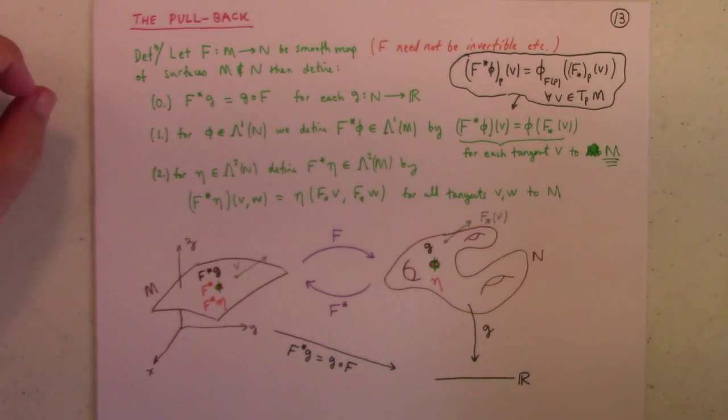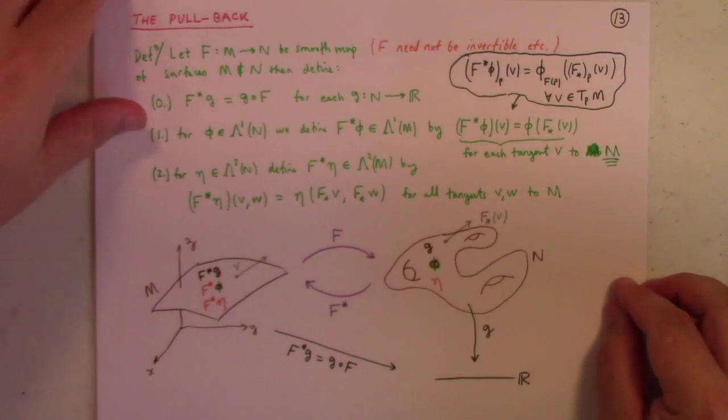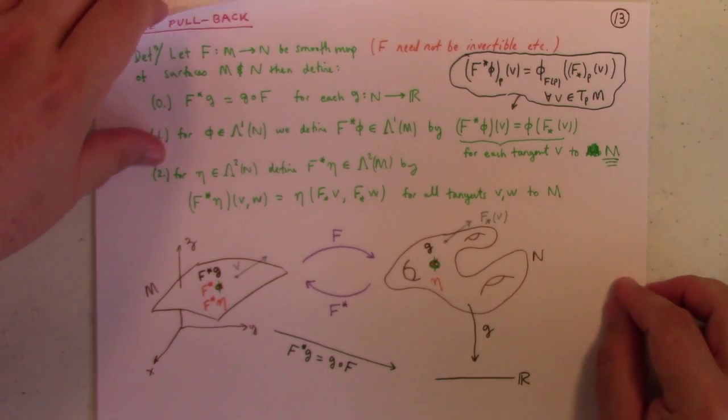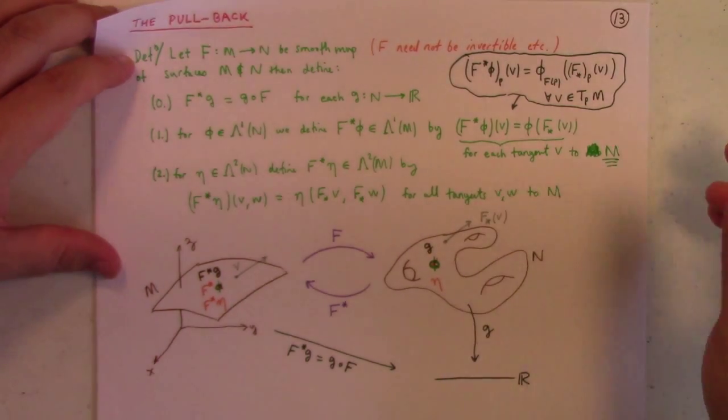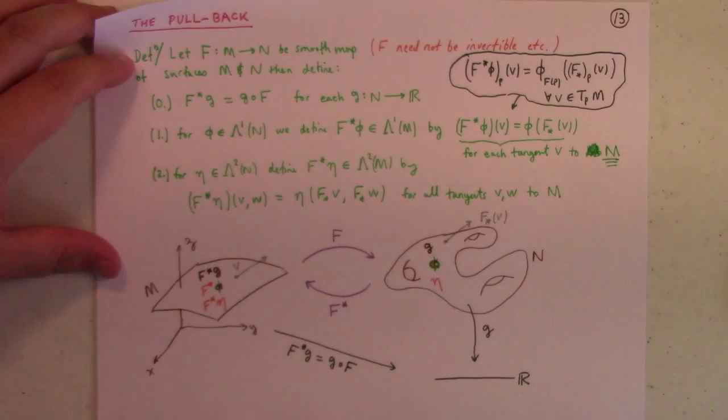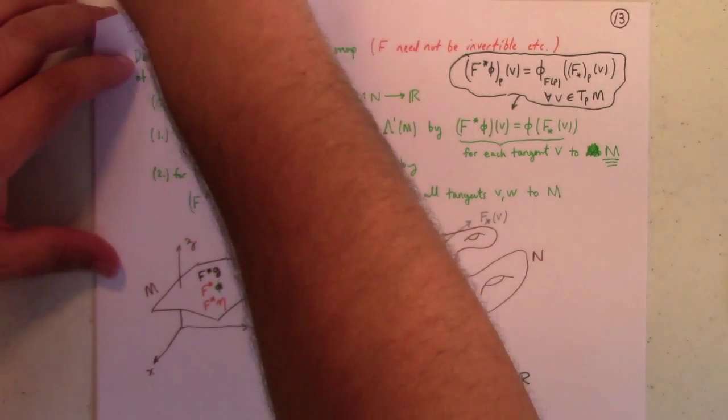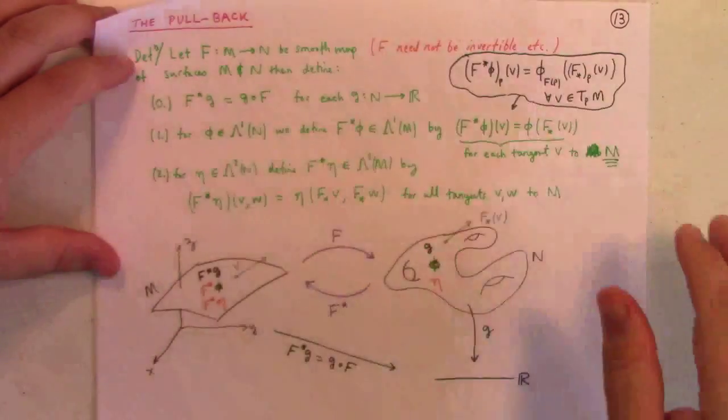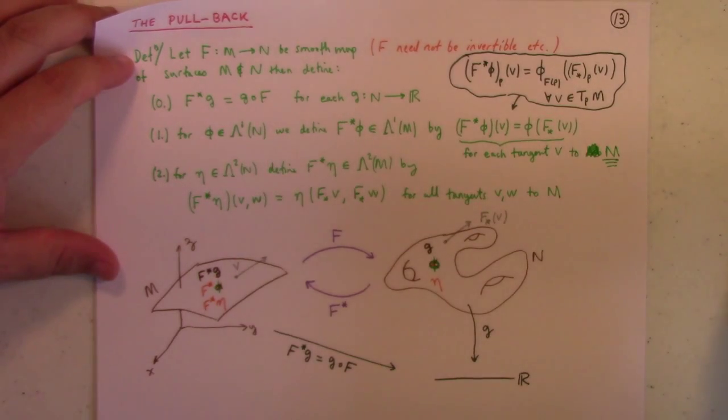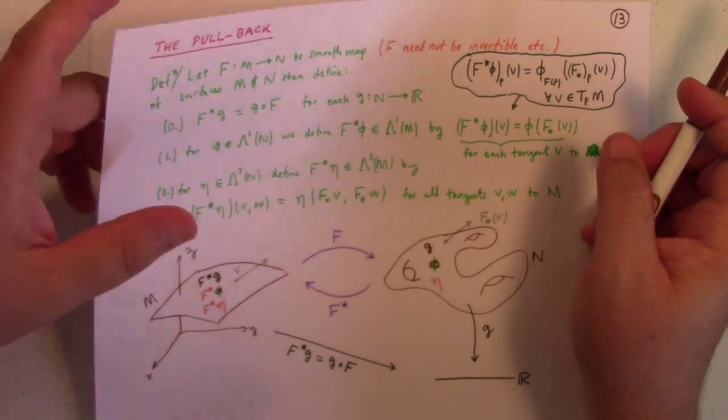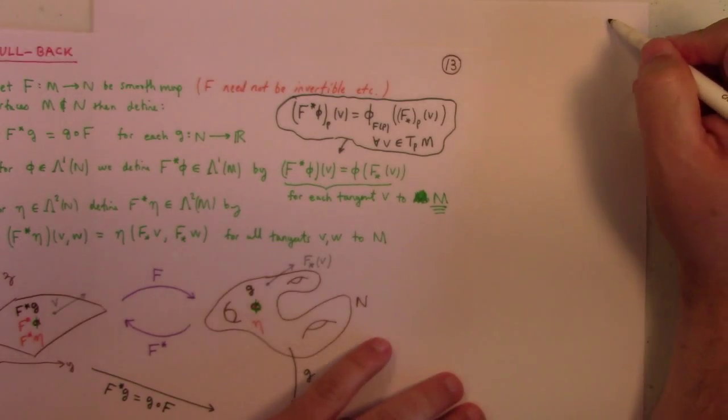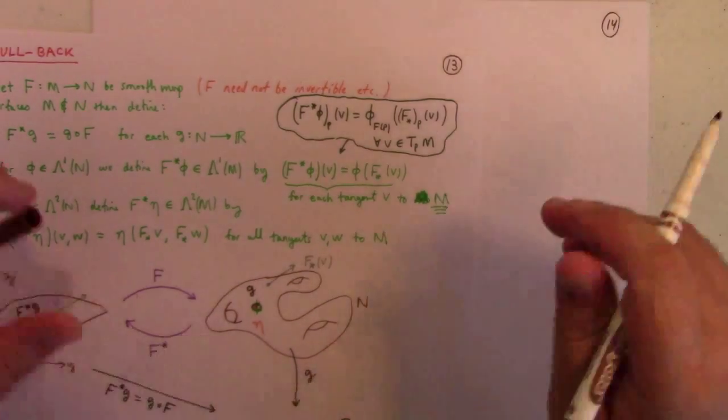Now, pullback and push forward are complementary notions, they're both very useful. Pullback is much more forgiving than push forward. You can push forward a vector field and maybe not get a vector field. You might end up with a map, if you don't have a map which is injective, then you could hit the same point twice, and to that same point you might attach two different vectors, and if you attach more than one vector to a point, well goodness, it's not a vector field is it.